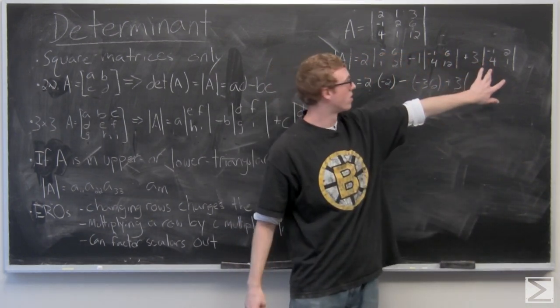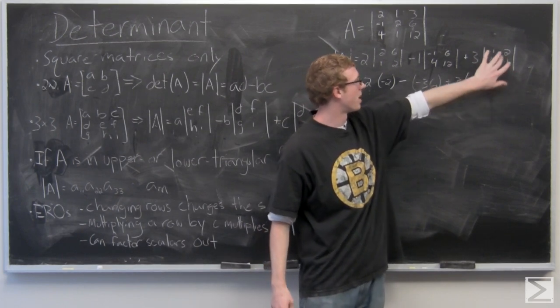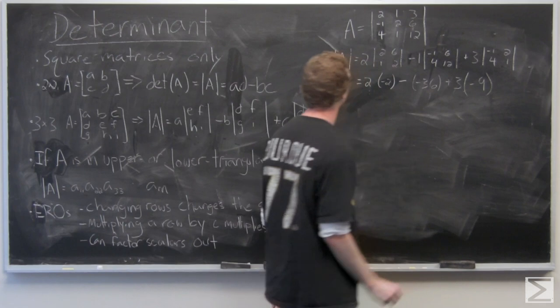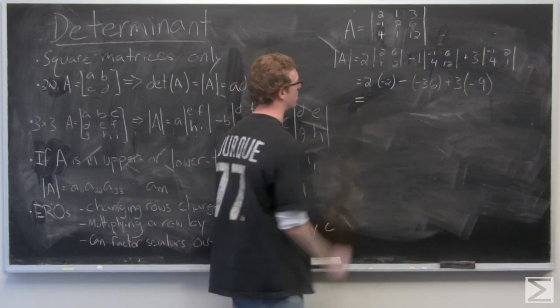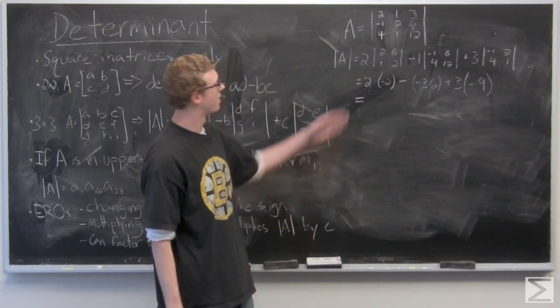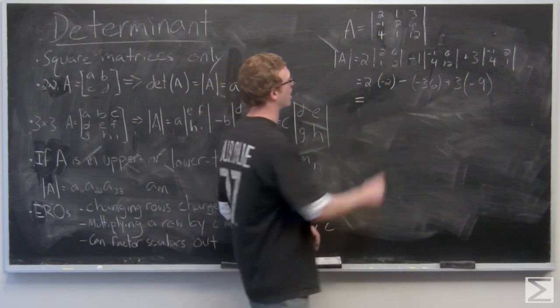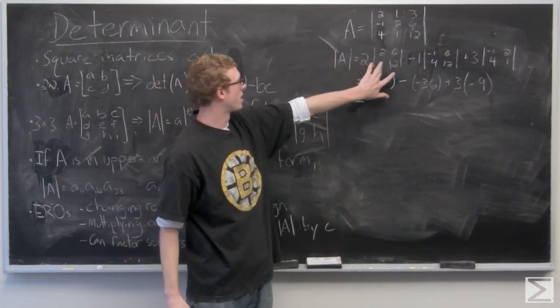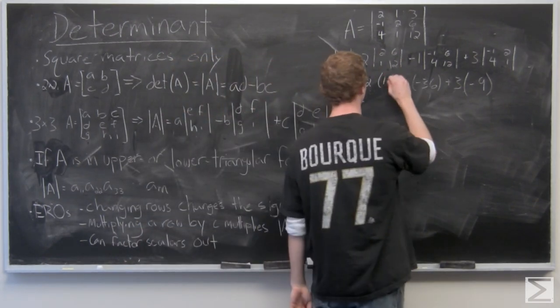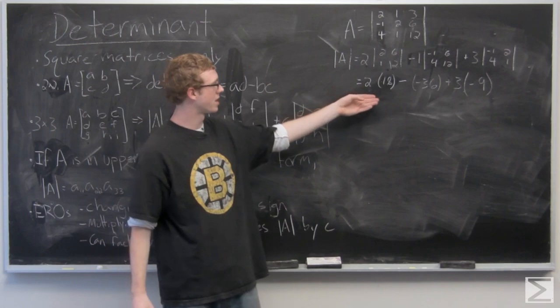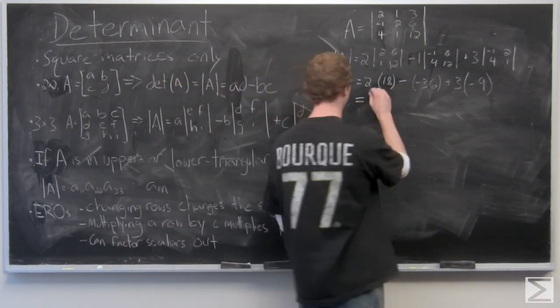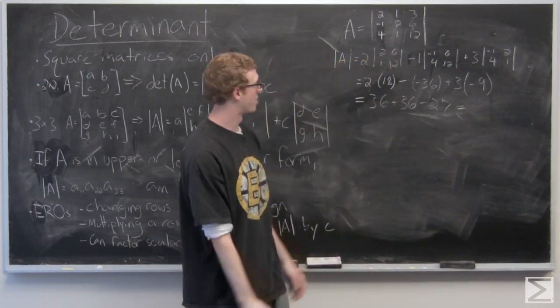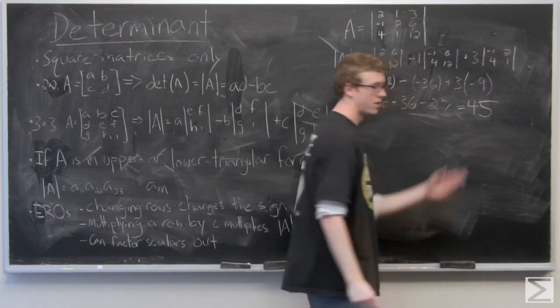So we have in this rightmost column, we have negative 1 times 1 minus 4 times 2. So the determinant of that matrix—oh, it looks like I made a little mistake here in the first column. This was supposed to be a 12, not a 2. So this value is going to change, it's actually going to be 2 times 18. So we're going to have 36 minus negative 36, which is 36 plus 36 minus 27. And the value of that determinant is going to be 45.